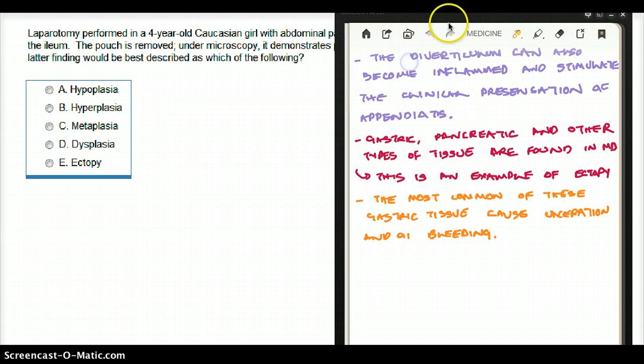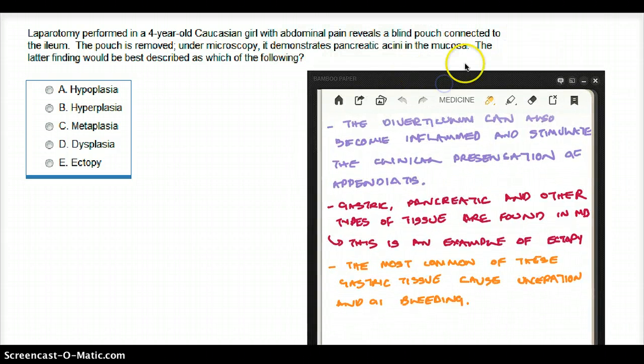What kind of phenomenon do we see here in Meckel's diverticulum? It's going to be ectopia. The latter finding would be best described as which of the following? It's going to be ectopia.